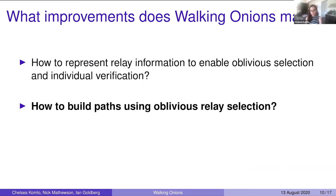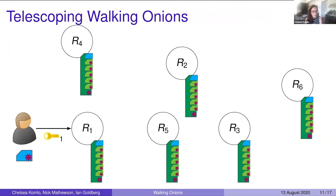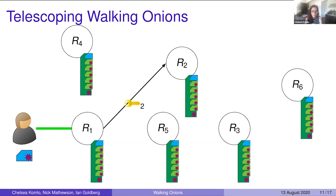Now let's look at how to build paths using oblivious relay selection, where the client doesn't know the full network state but still needs to select relays for their path. In our first variant, Telescoping Walking Onions, clients begin by bootstrapping to a relay via some out-of-band mechanism and perform the first step in circuit construction similarly to TOR today. When selecting the second relay, the user samples an index completely at random within the distribution. The first relay finds an SNP containing the client's chosen index within its index range, extends the path to that relay, and returns the SNP to the client.